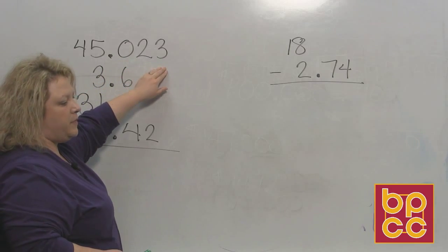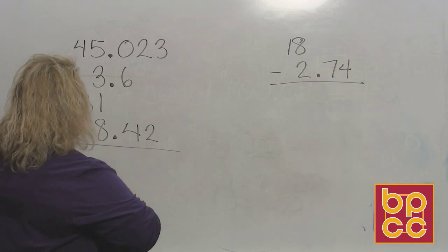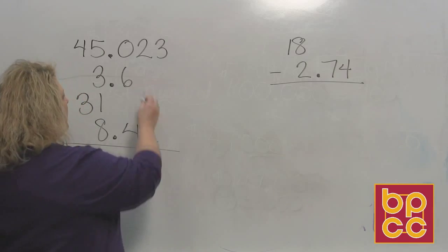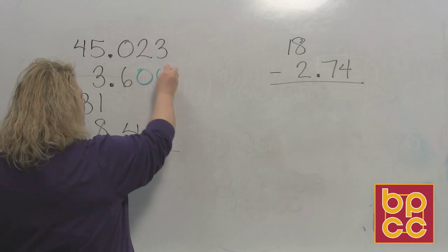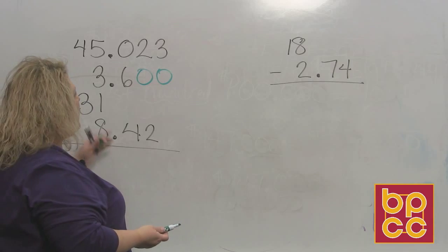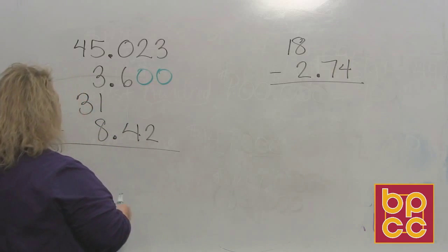That's got one, two, three digits behind the decimal. You have three and six tenths. And if you want to make sure that it has enough places so that you keep everything lined up, you can put zeros in place of the gaps that are missing. And that'll just help you keep everything lined up correctly.